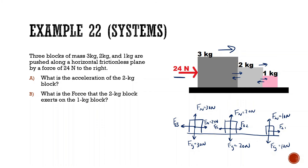The force of the 2 kg block on the 3 kg block is equal and opposite to the force of the 3 kg block on the 2 kg block. Similarly, the force of the 2 kg block on the 1 kg block is equal and opposite to the force of the 1 kg block on the 2 kg block. Being able to draw the free body diagram is the tricky part — once you can do that, you're set.